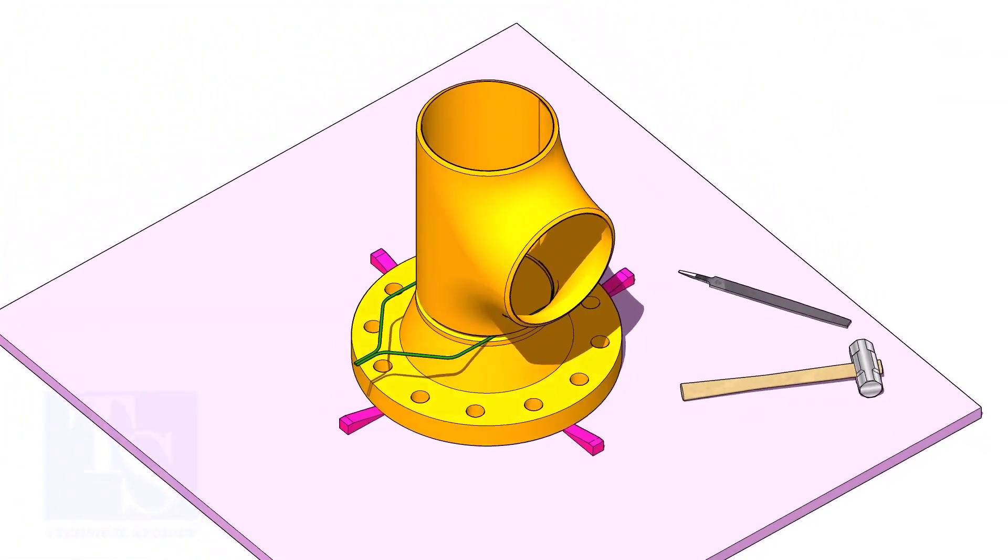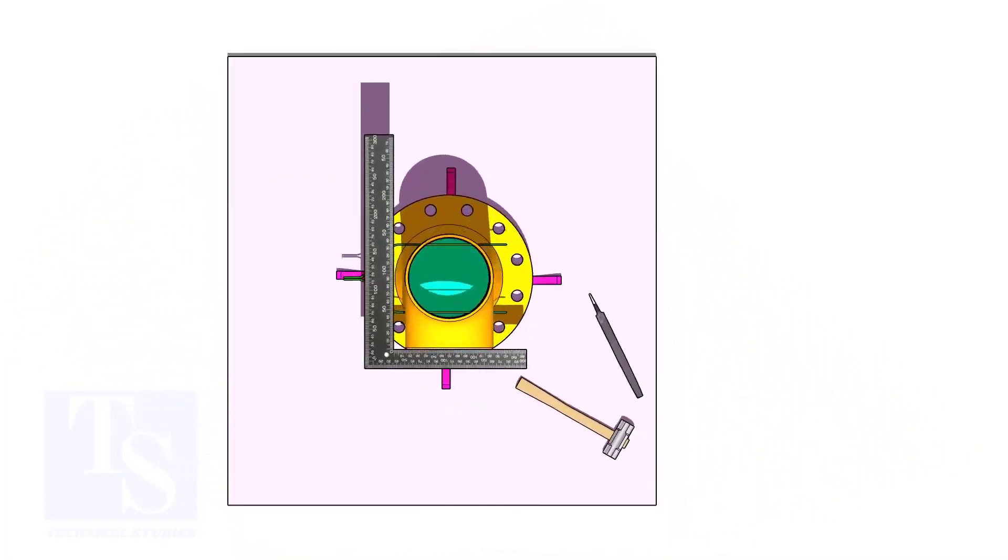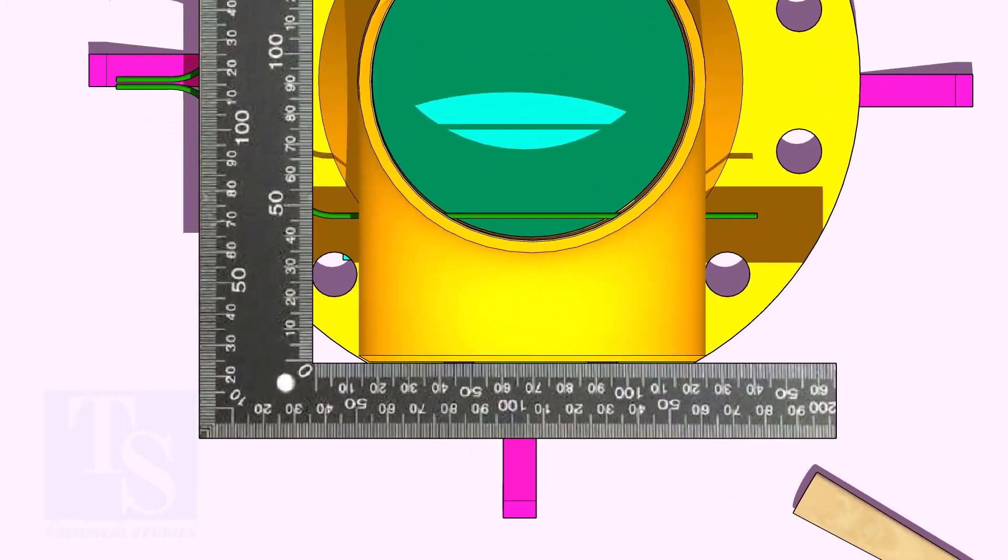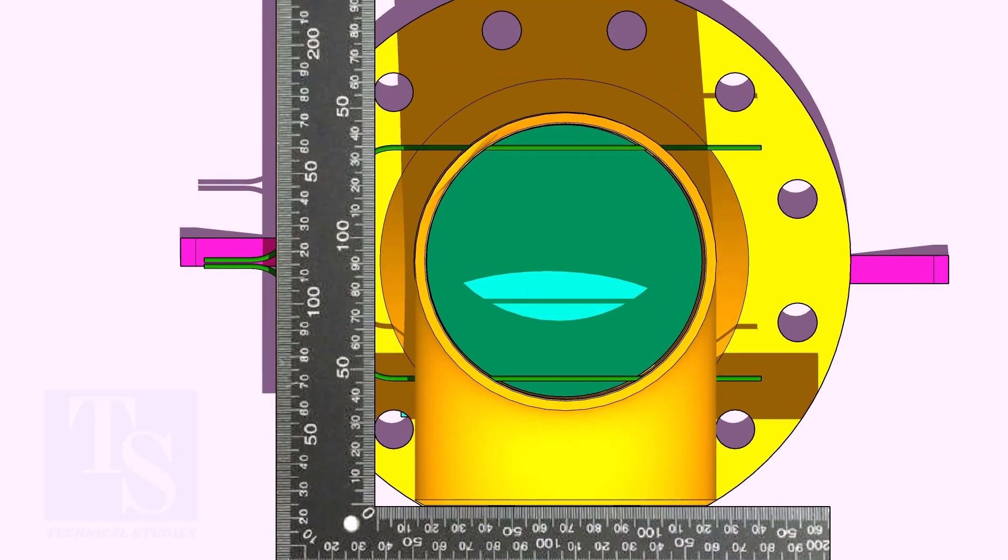Put the tee on the flange. Match the hole center of the flange and the tee face as shown. Correct the overlap.